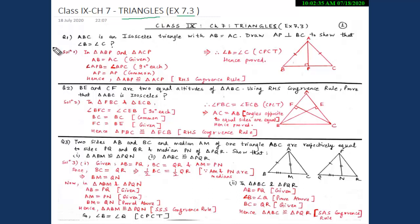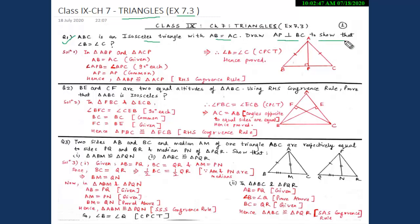Our first question for today is: ABC is an isosceles triangle with AB equal to AC. We have to draw AP which is perpendicular to BC to show that angle B is equal to angle C.